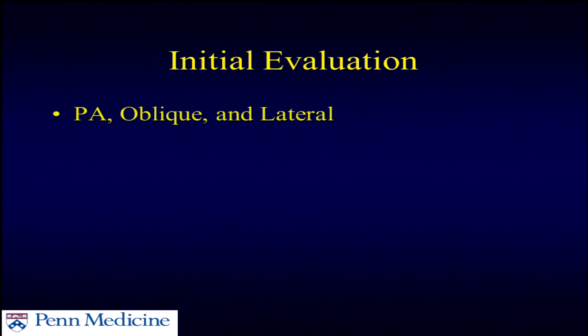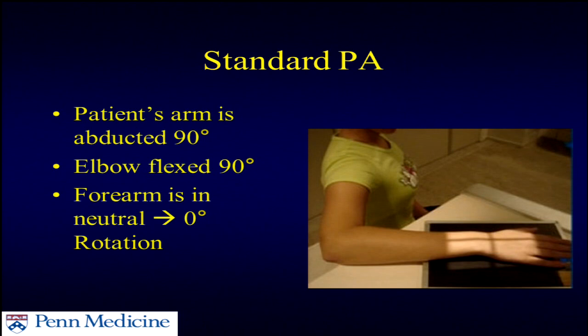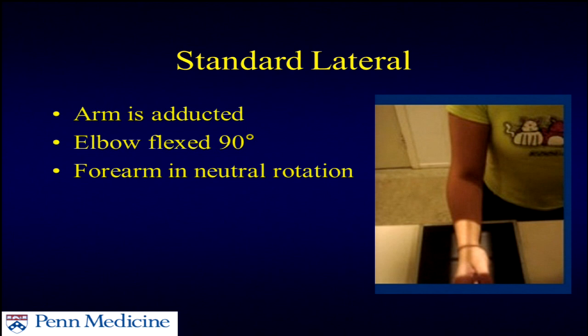We obviously obtain the standard PA, oblique, and lateral films. For younger patients where I have any concern for the SL ligament or for the scaphoid, we'll obtain the grip views and ulnar deviation views. For the PA, you want the arm abducted to 90 degrees, the forearm in neutral, and the elbow flexed to 90 degrees. Ensuring your techs obtain these in the appropriate fashion is important.